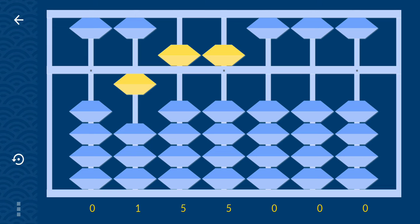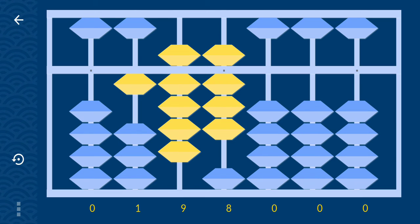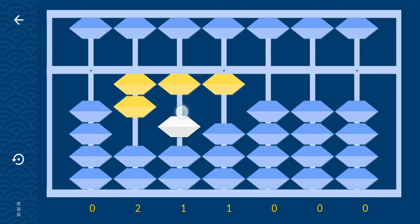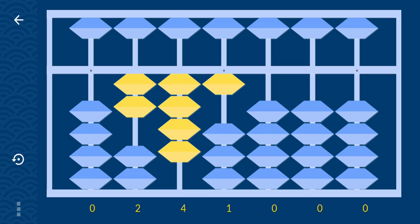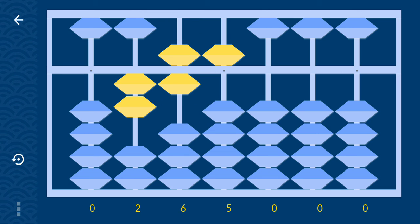Plus 21: direct plus 20, direct plus 1. Plus 22: direct plus 20, direct plus 2. Plus 23: to add 20 minus 80 plus 100, and to add 3 minus 7 plus 10. Plus 24: direct plus 20, direct plus 20. Plus 25: to add 20 plus 50 minus 30, and to add 5 minus 5 plus 10.